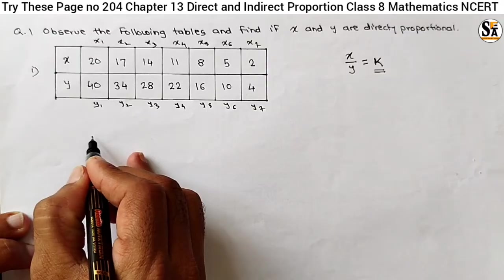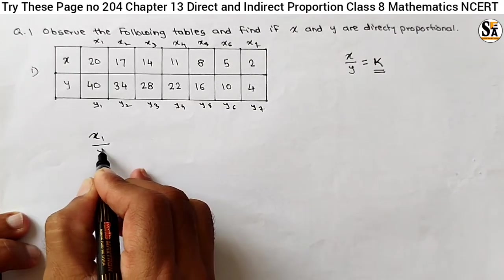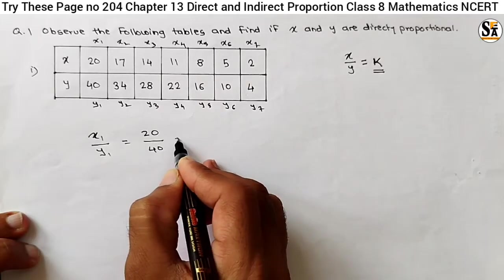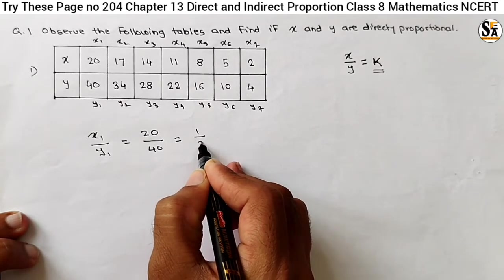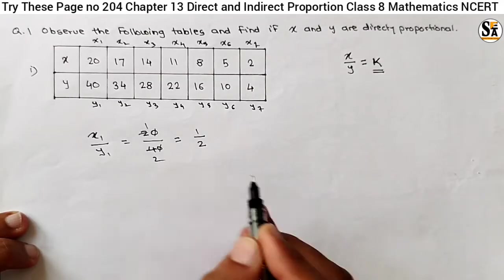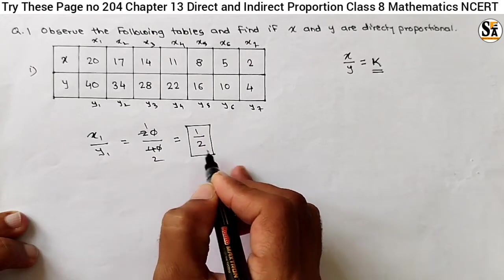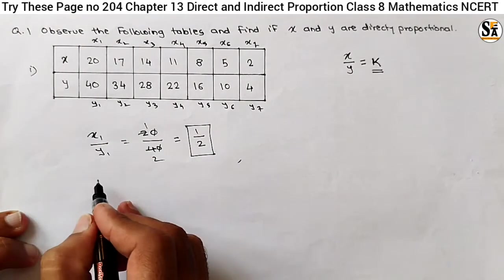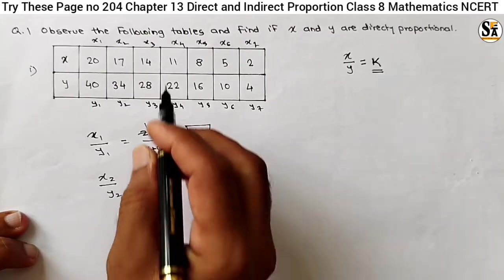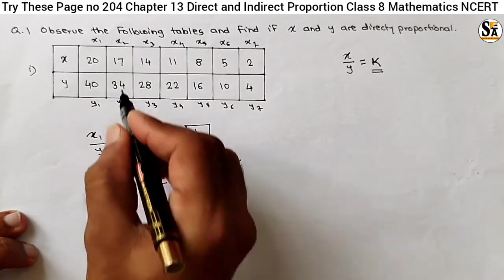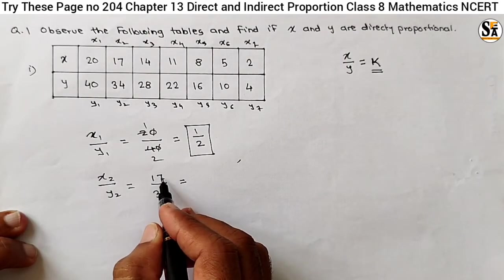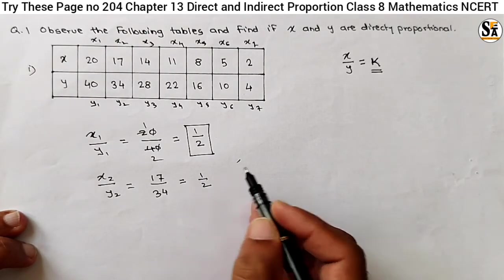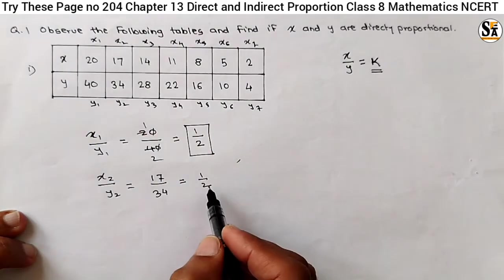For x1 and y1, take the ratio of x1 to y1. What is x1? x1 is 20 and y1 is 40. The ratio is 1 upon 2, because 2 to 4 means 1 by 2. So we must get this constant for all remaining values in the table. Let's try x2 upon y2. What is x2? x2 is 17, y2 is 34. Here again, 17 to 34 means 1 by 2. Here again we are getting the same constant, 1 upon 2. So for the first two values, the ratio is constant.